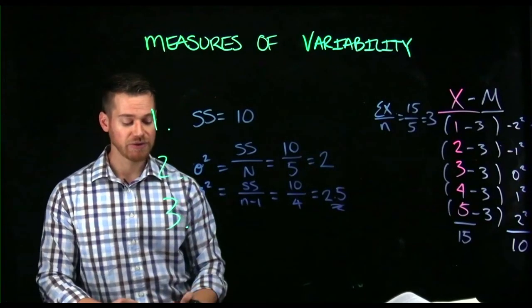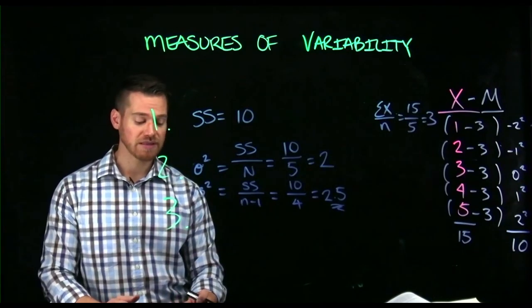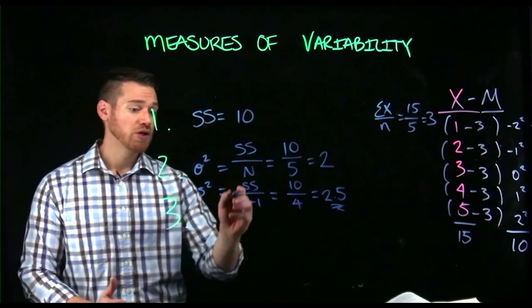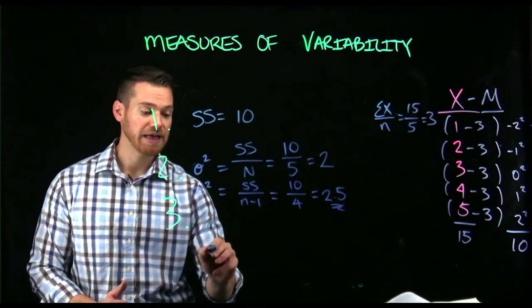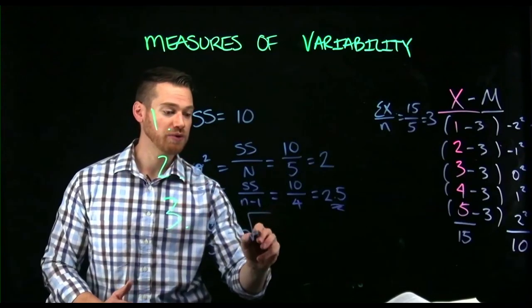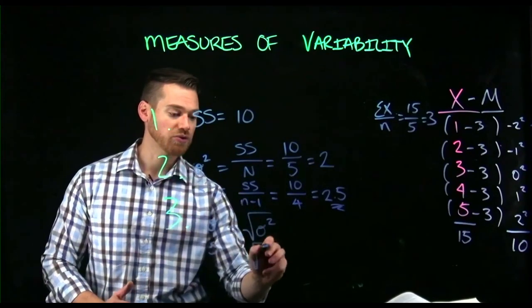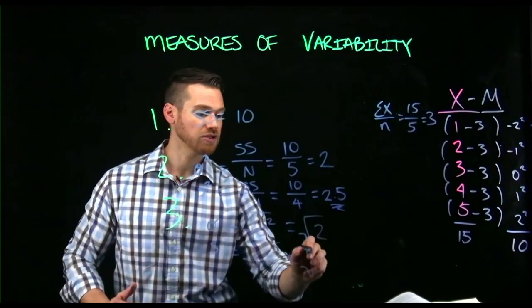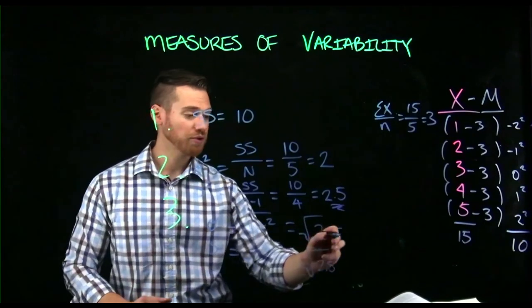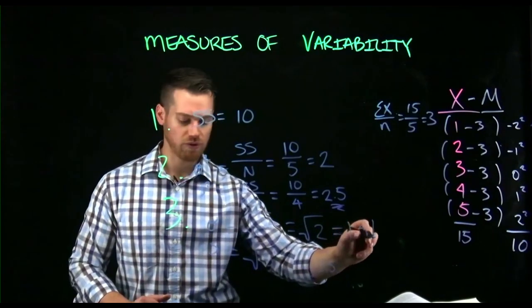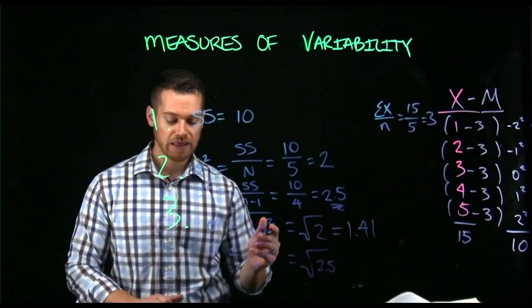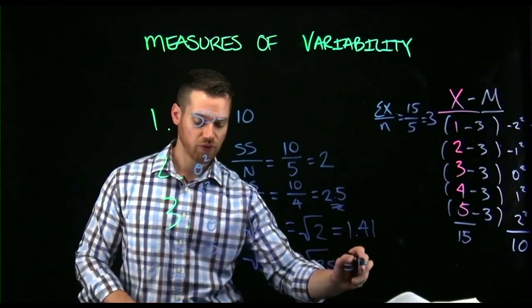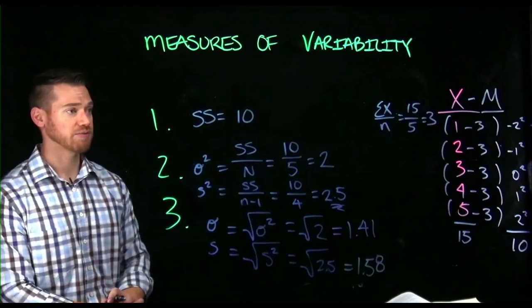So the last thing we could do is we can get the standard deviation. And the standard deviation requires us to square root these things. That's all we need to do. So it is sigma and S and it is the square root of sigma squared, which was the variance or the square root of S squared. So here it's the square root of two and here it's the square root of 2.5. And the square root of 2 is 1.41 if we round to two decimal places. And the square root of 2.5 is 1.58 rounded to two decimal places.